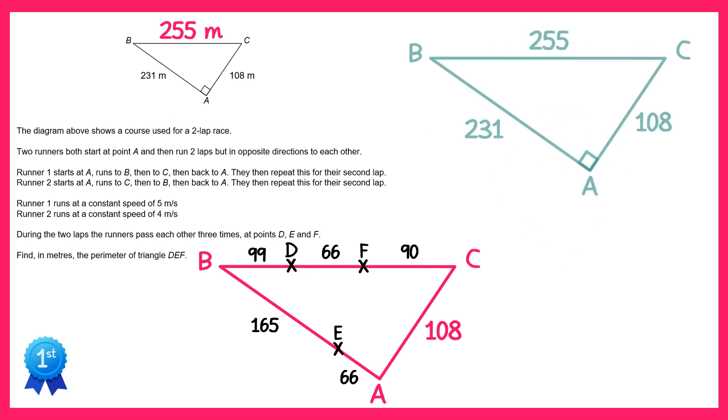Now if we look at the original triangle remember it was a right angle triangle we can easily calculate this angle here which I've labelled X using Sokotoa. So if we do inverse cos of 231 over 255 we find that angle which is 25 point all of this degrees. So let's label that onto the diagram.